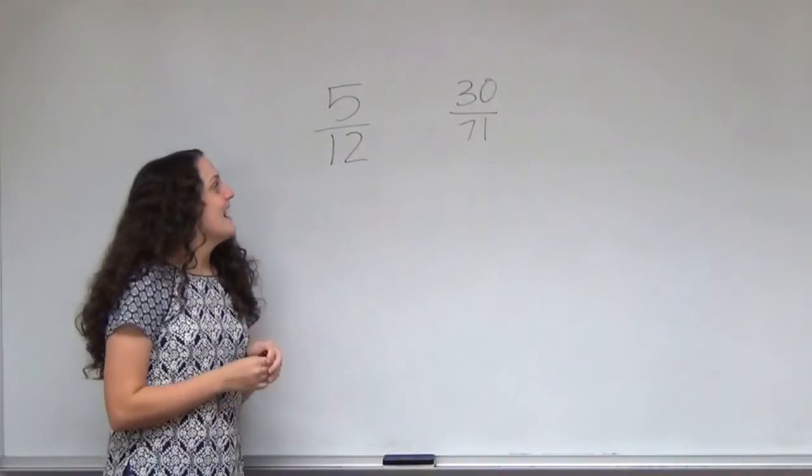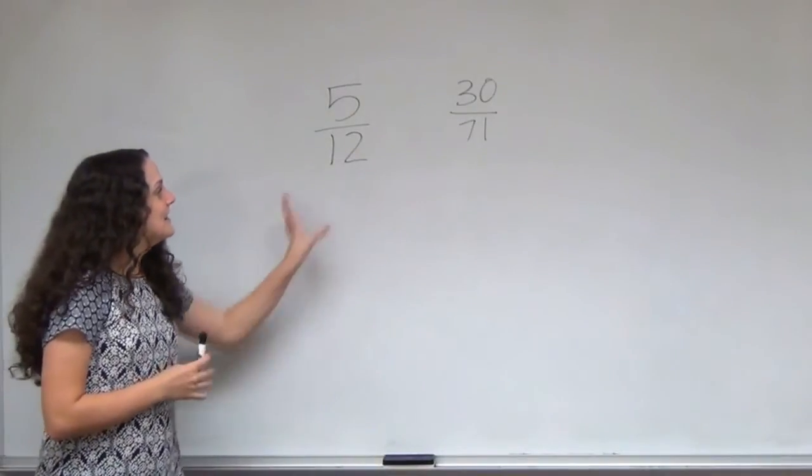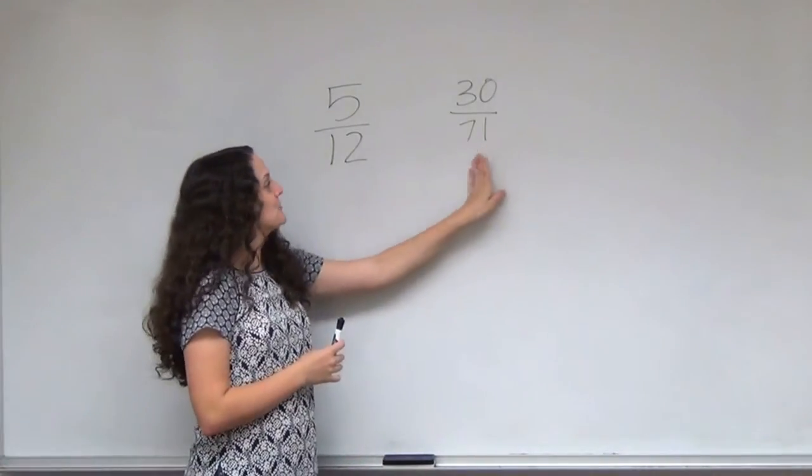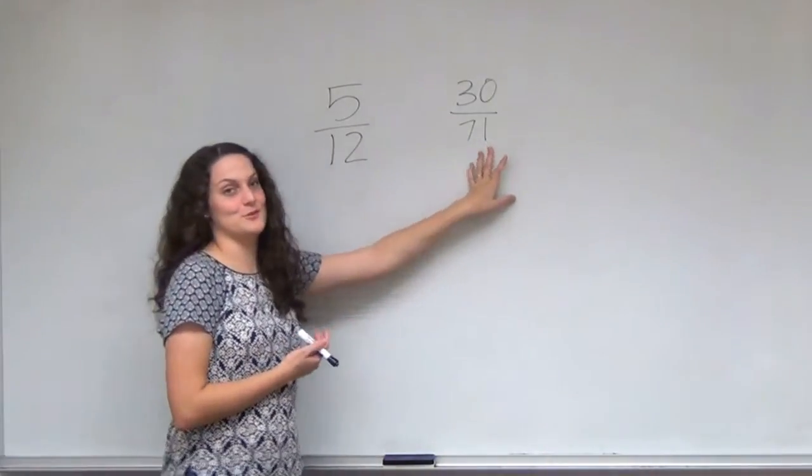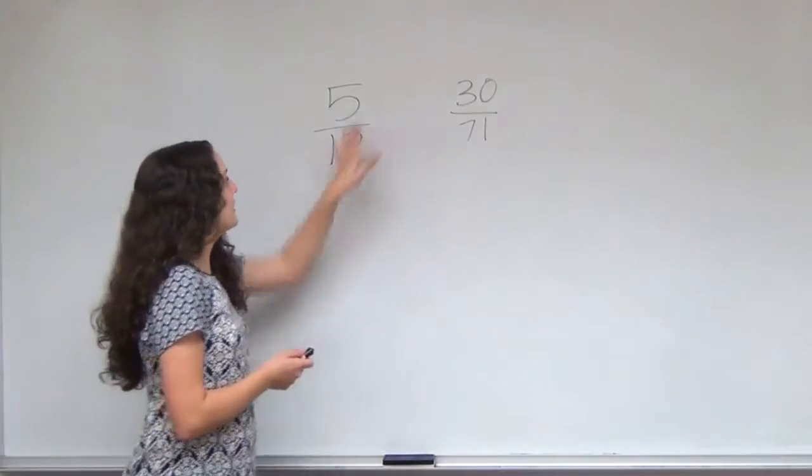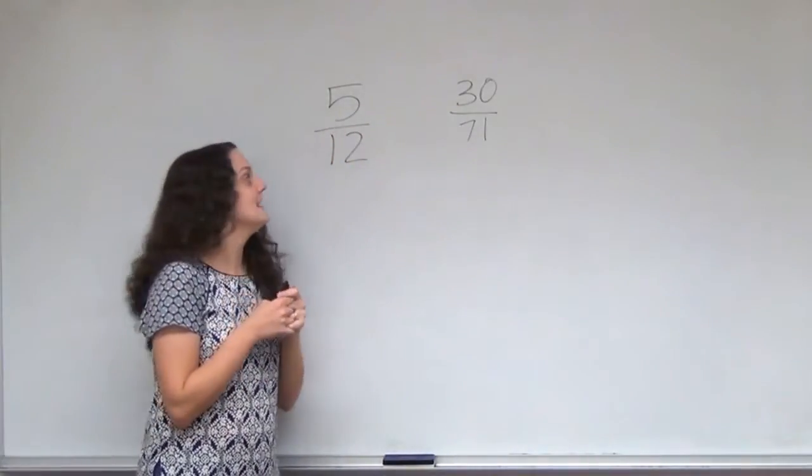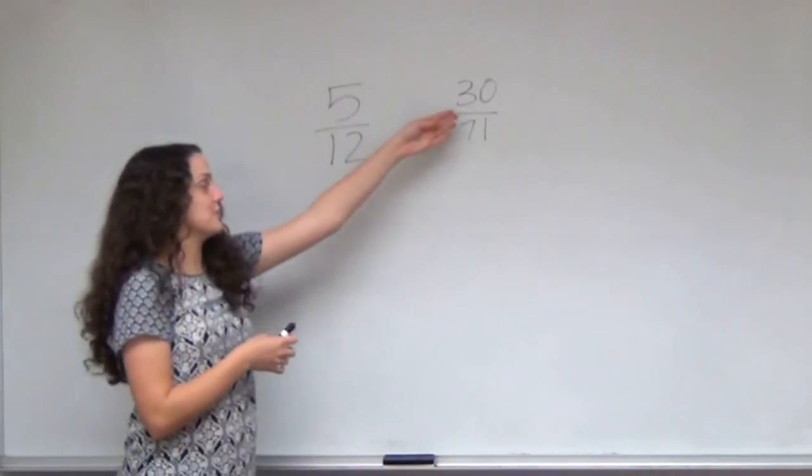Looking at these fractions, I immediately noticed this uncomfortable number of 71 to me, because it doesn't seem like a number I can do a lot with easily. But looking at the 5 and the 30, you notice they're related, and that 5 is a factor of 30.